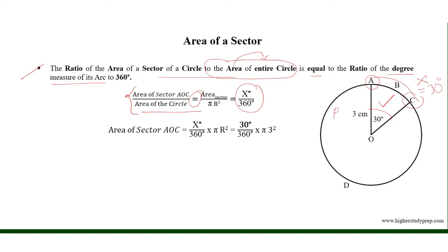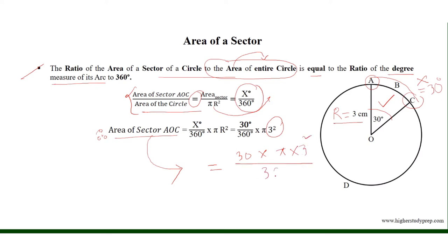The radius of the circle is equal to 3 cm. Therefore, the area of sector A, O, C equals 30 divided by 360 multiplied by pi R squared, or 30 divided by 360 multiplied by pi times 3 squared, where R equals 3. So the area of sector A, O, C equals 30 times pi times 3 squared divided by 360, which results in 3 pi over 4 square centimeters.